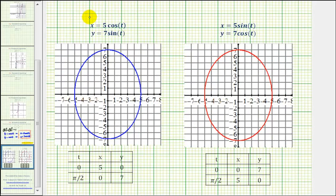Again, here are the parametric equations that we found by letting x divided by 5 equal cosine t and y divided by 7 equals sine t. These two parametric equations would also be correct if we let x divided by 5 equals sine t and y divided by 7 equals cosine t.